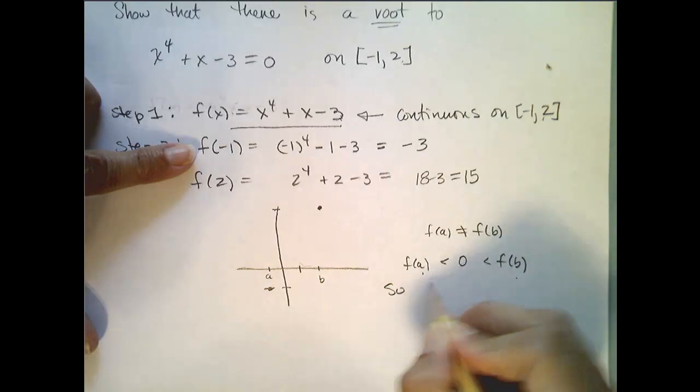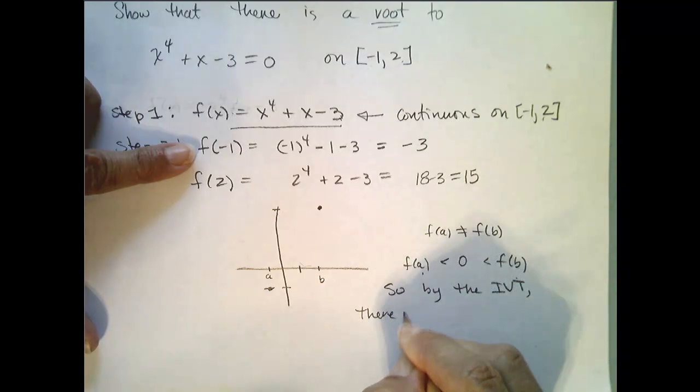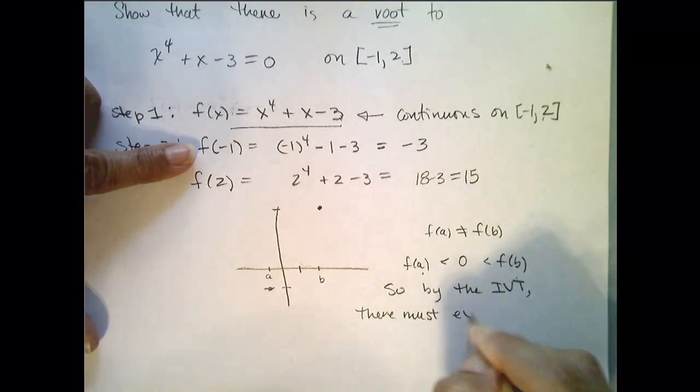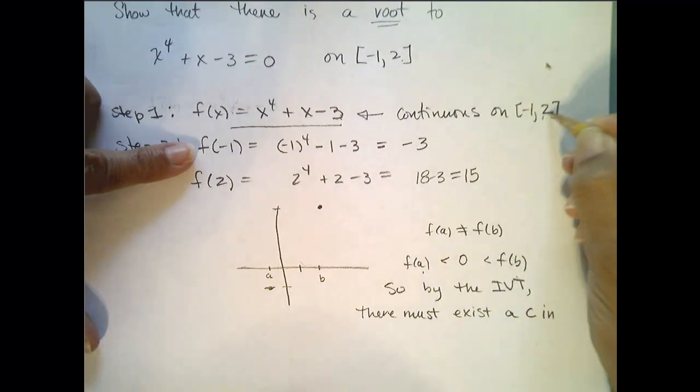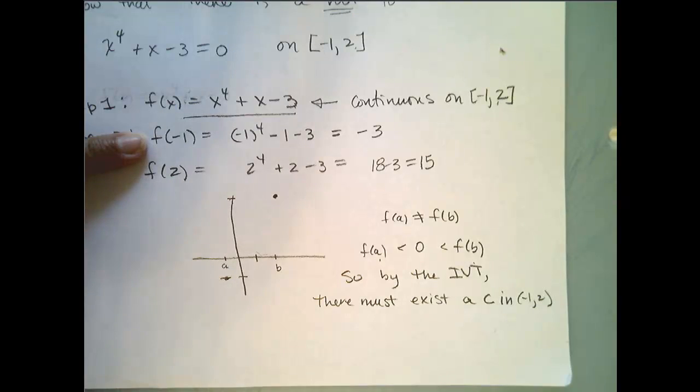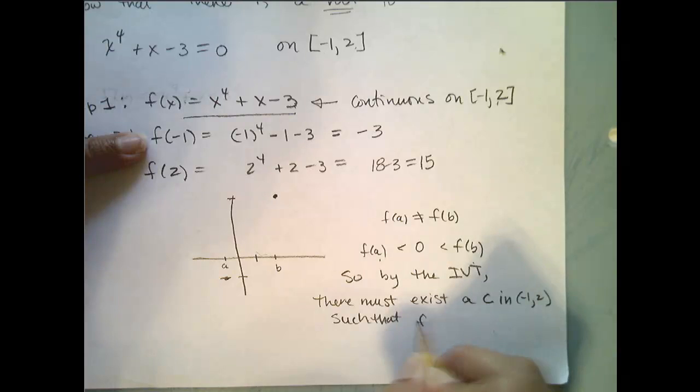So, by the Intermediate Value Theorem, there must exist a c in this open interval, so negative 1 to 2, such that f of c equals 0.